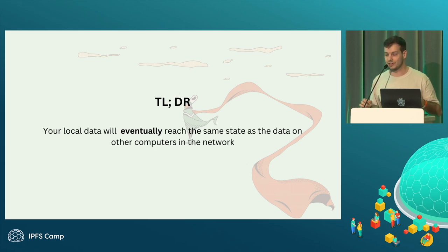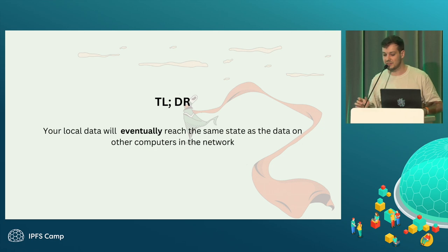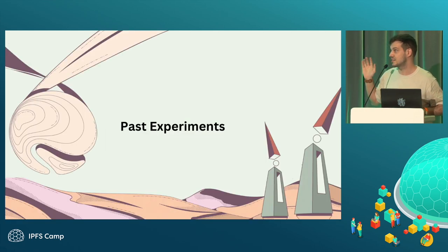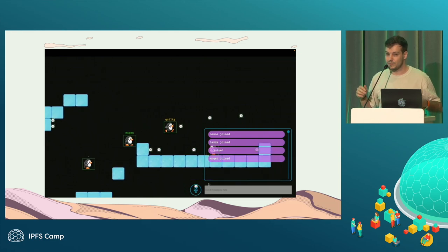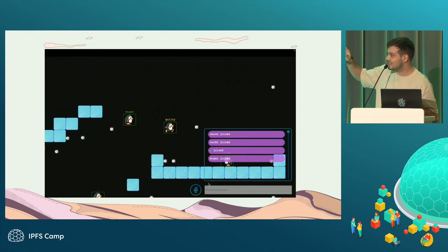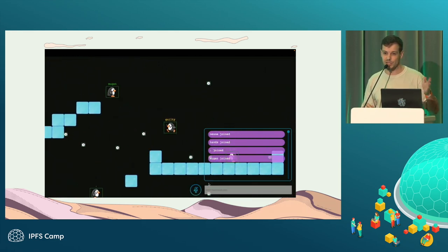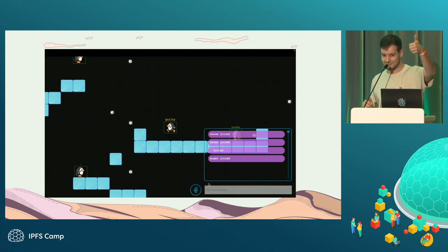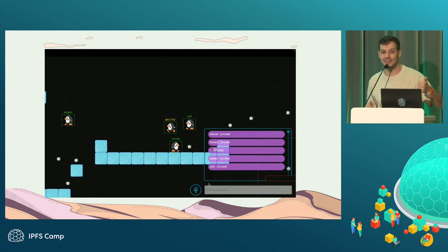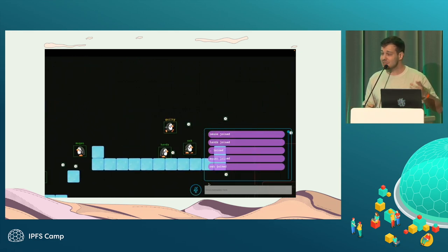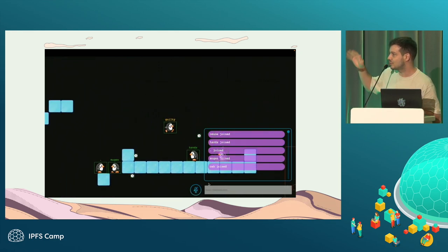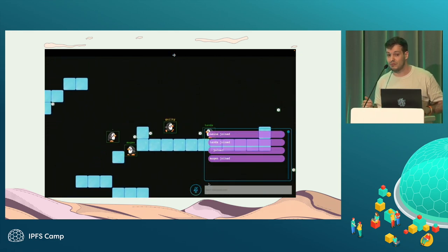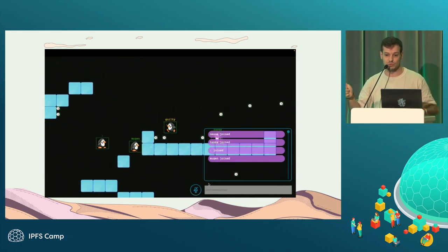We currently have JSON CRDTs, which are composed of multiple smaller data types including grow-only sets. Based on that, we did some past experiments within Topology. One of the main examples was Penguin World, built with CRDTs using a library that is super well-known in the JS ecosystem, which is YJS. It's a really nice library. It doesn't implement basic types, but it implements lots of nice stuff. We even had collision there. We posted this around and got lots of great feedback, also from the authors of YJS, which was super cool.